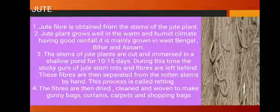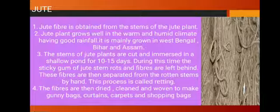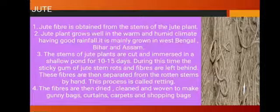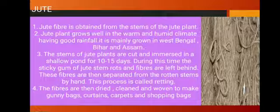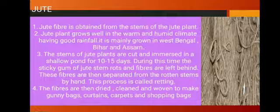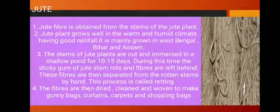Jute is also a plant fiber. Jute fiber is obtained from the stems of the jute plant, which grows well in a warm and humid climate with good rainfall. It is mainly grown in West Bengal, Bihar, and Assam. The stems of the jute plant are cut and submerged in a shallow pond for 10 to 15 days. During this time, the sticky gum of the stem rots and the fibers are left behind. These fibers are then separated from the root and stem by hand — this process is called retting. The fibers are then dried, cleaned, and woven to make gunny bags, carpets, and shopping bags.